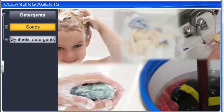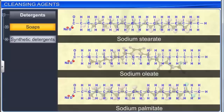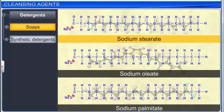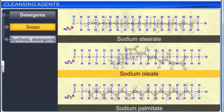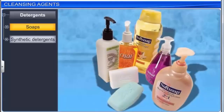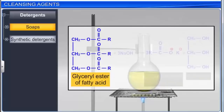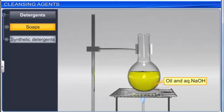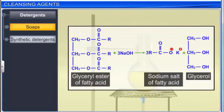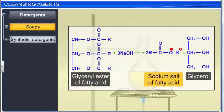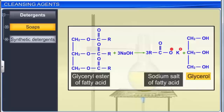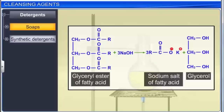Soaps used for cleaning are sodium or potassium salts of naturally occurring long-chain fatty acids such as stearic, oleic, and palmitic acids. Soaps containing sodium salts are formed by heating oil or fat of vegetable or animal origin — which is a glycerol ester of a fatty acid — with an aqueous sodium hydroxide solution. The hydrolysis of oil or fat results in the formation of a mixture of a sodium salt of a fatty acid and glycerol. As the salts thus formed are used as soaps, the alkaline hydrolysis of oils and fats is commonly known as saponification.